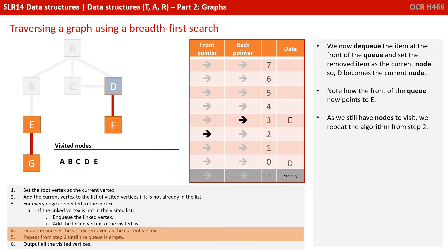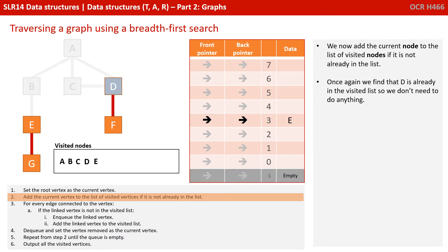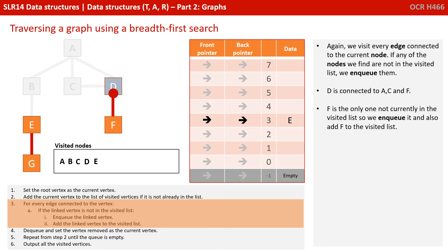We now dequeue the item at the front of the queue and set the removed item as the current node, so D becomes the current node. Note how the front of the queue now points to E. We've still got nodes to visit, so we repeat the algorithm from step 2. D is already in the visited list, so we don't do anything there. D is connected to A, C and F, but F is the only one not currently in the visited list, so we enqueue it and also add F to the visited list.